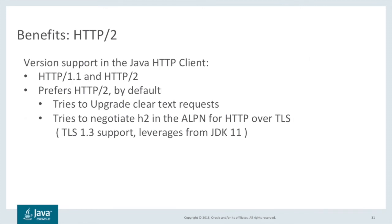The on-wire format has been updated significantly from that of HTTP 1.1. HTTP 2 uses a more compact binary format and headers are compressed using HPACK compression. The HTTP client supports both HTTP 1.1 and HTTP 2 but prefers HTTP 2 by default. For new, clear, non-TLS connections, the client automatically adds the appropriate protocol upgrade headers to let the server know that the client supports HTTP 2. If the server also supports HTTP 2, the connection will be upgraded. For HTTP over TLS, the client uses the Application Layer Protocol Negotiation TLS extension to try to negotiate H2 with the server. If the server does not support HTTP 2, the connection falls back to HTTP 1.1. As of JDK 11, TLS 1.3 is supported, and the HTTP client attempts to negotiate TLS 1.3 for all new TLS connections.